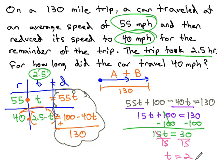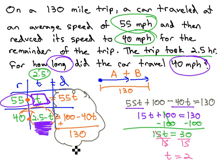However, we must be careful we are answering the correct question. The question is asking us, how long did the car travel at 40 miles per hour? Notice T is the time at 55 miles per hour. Two hours were spent at 55 miles per hour.